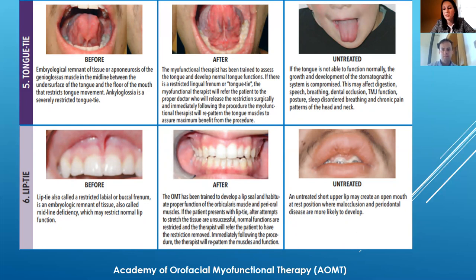If left untreated, an untreated short upper lip may create an open mouth resting position where malocclusion — crooked teeth — and periodontal disease are more likely to develop. That habitual mouth breathing increases inflammation not just in the oral cavity, but I also believe in the body. A lot of what begins in the oral cavity can trickle down and have some sort of cascading effect.